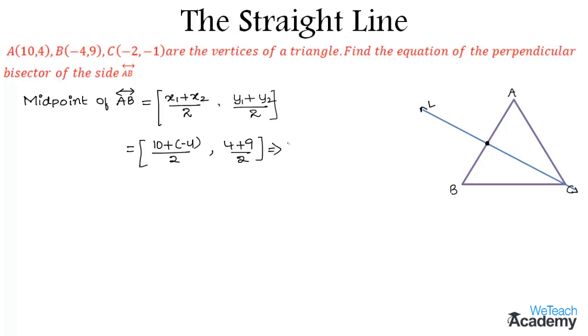That implies we get 10 minus 4, which is 6 divided by 2, giving us 3, and here we get 13/2. That is the point of intersection of side AB and line L.